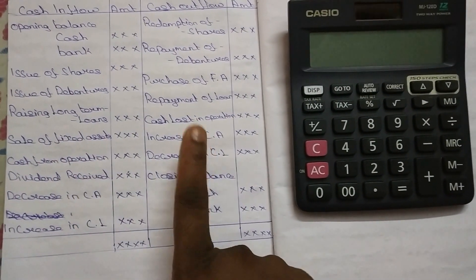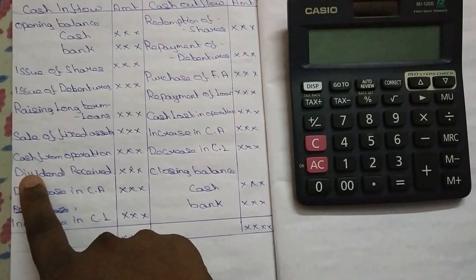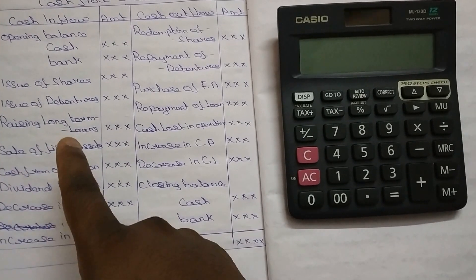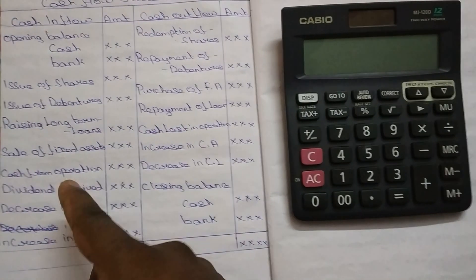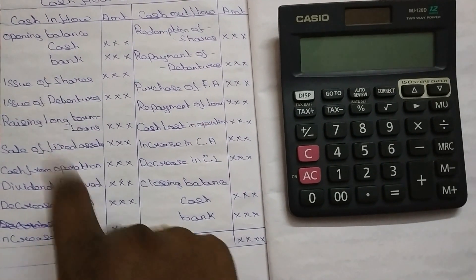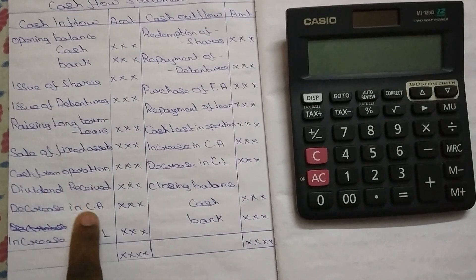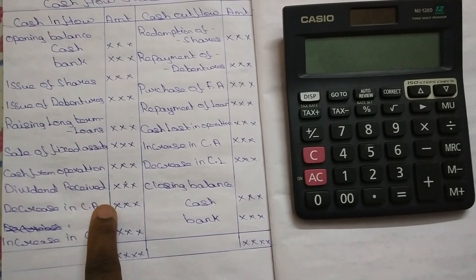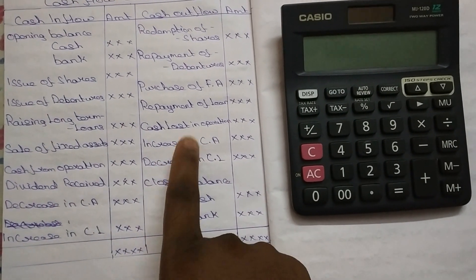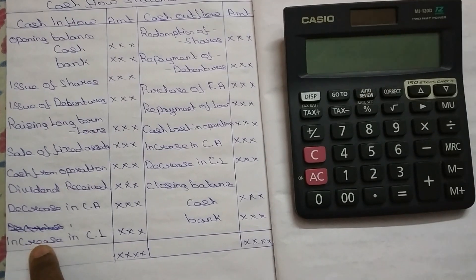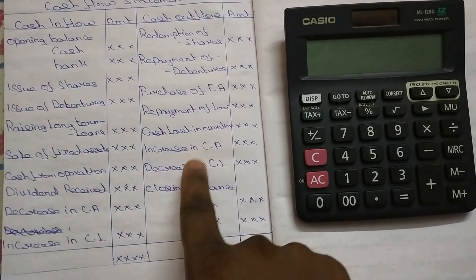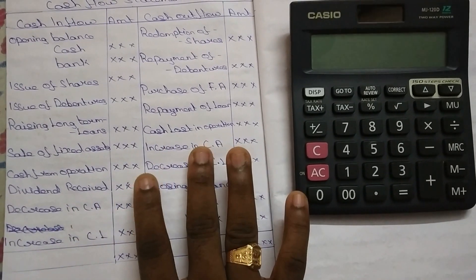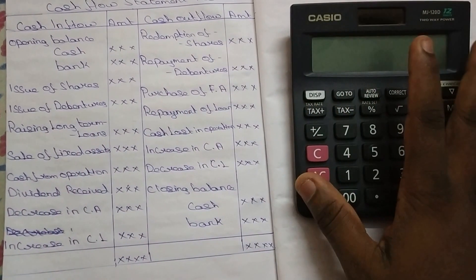Dividend walk time amount. Here we go to the opposite side: increase in current asset and decrease in current liability. Here we go to the two cons. The full sums of the cash flow statement are very easy.